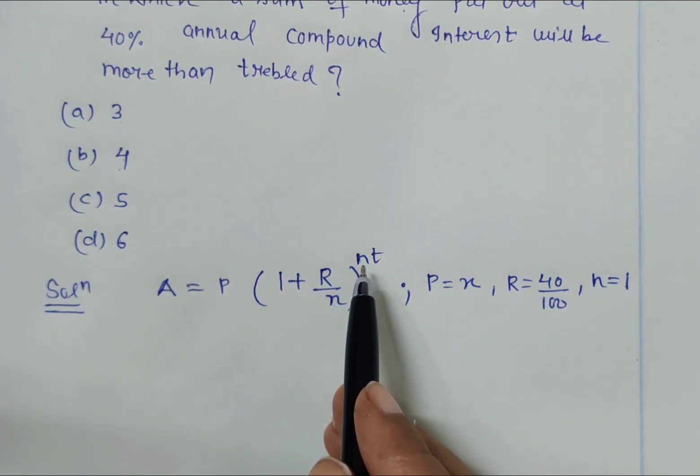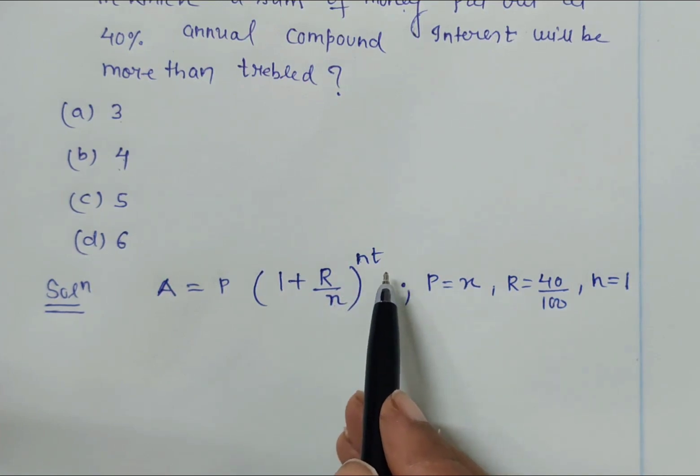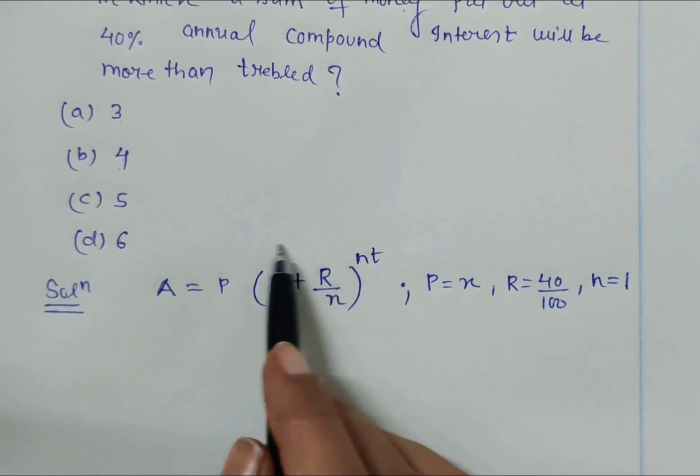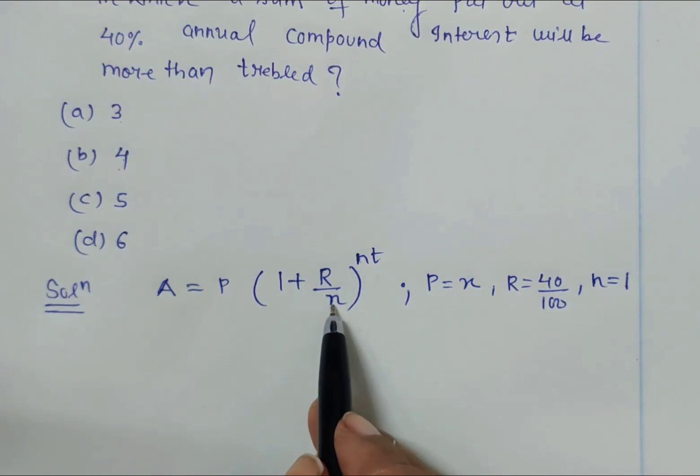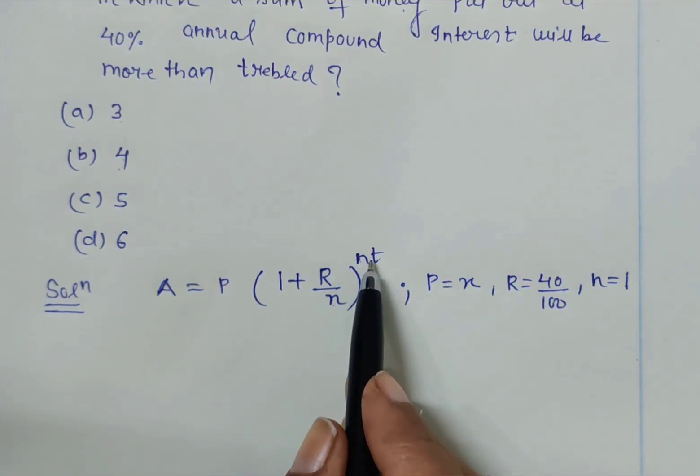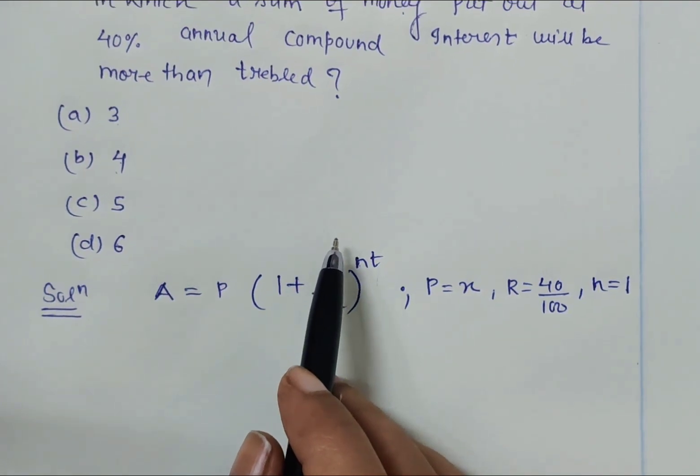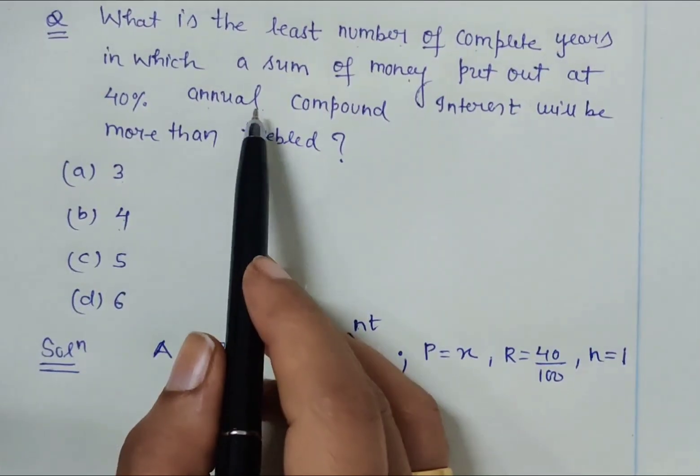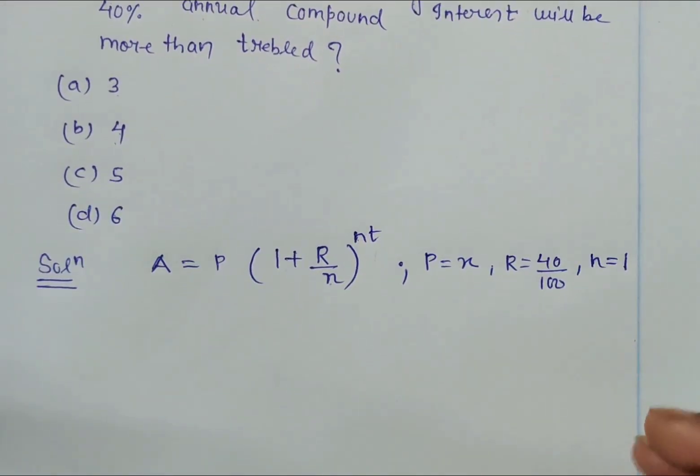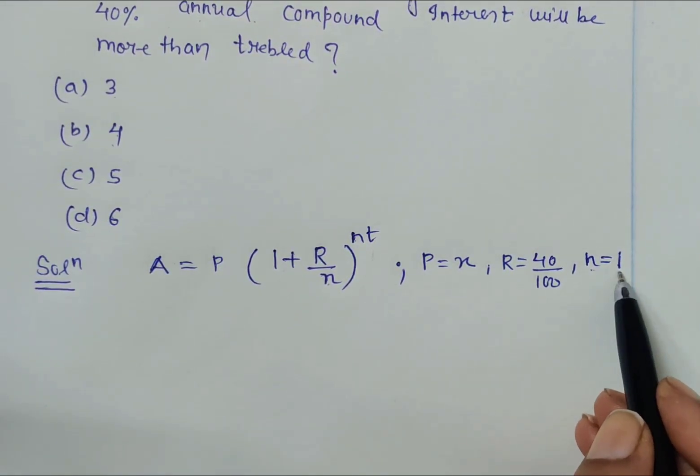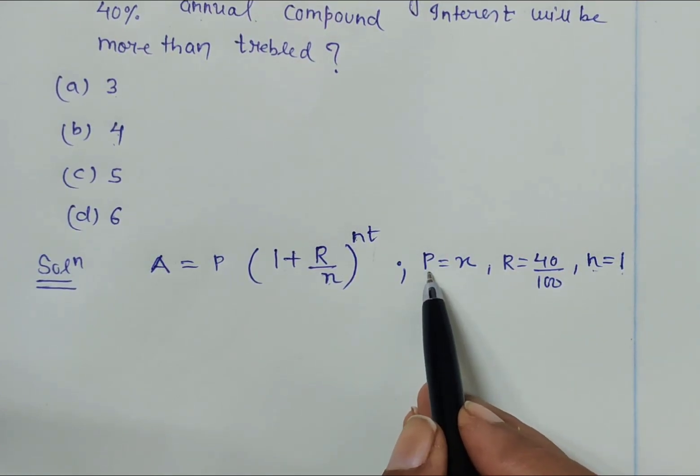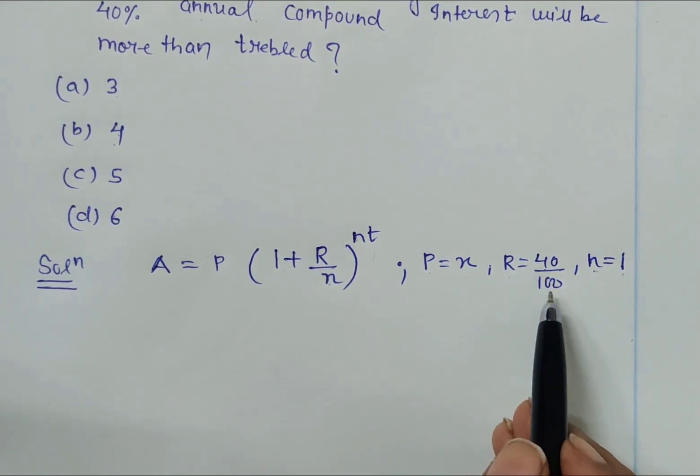I've written n, n, n here for the general formula if it is compounded half-yearly or quarterly. If compounded half-yearly, n would be 2 and time gets multiplied by 2. But here the question says annual compounding, so the value of n is 1.